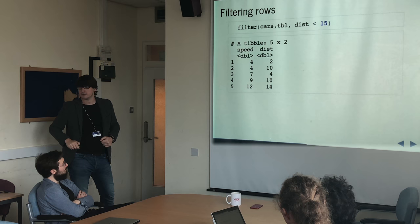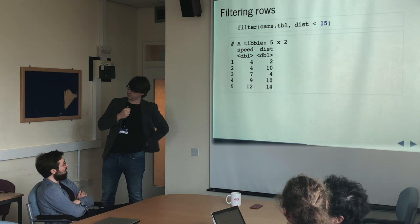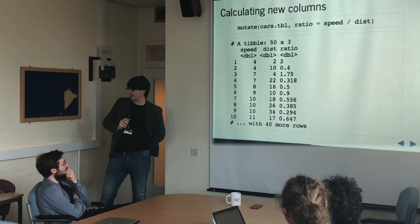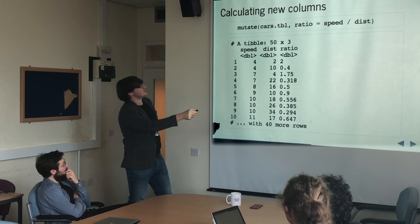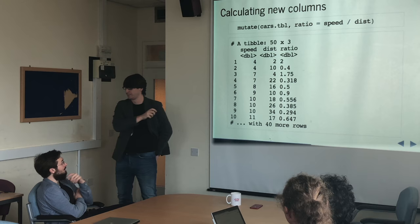You can filter the rows down by saying everything where distance is less than 15, and it will return that. So inside of the thing passed into filter is essentially the expression, and then it evaluates that expression. Then you can do mutate — mutate will add a new column based on either a fixed value or a derived one, such as working out the ratio between speed and distance.